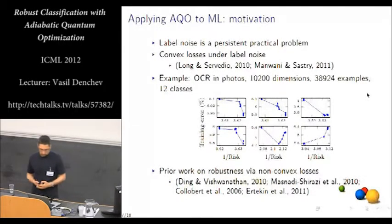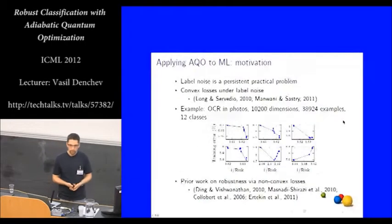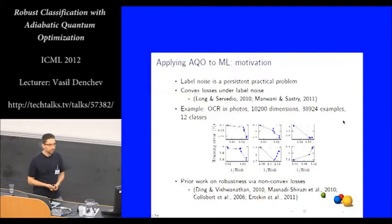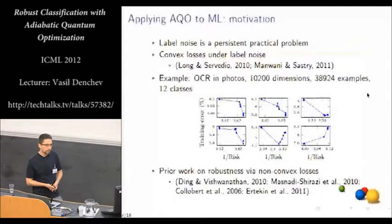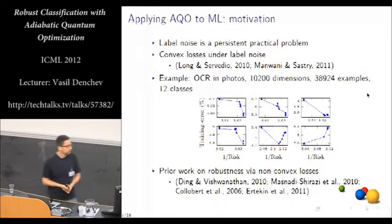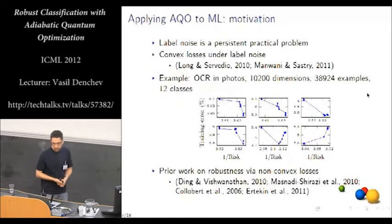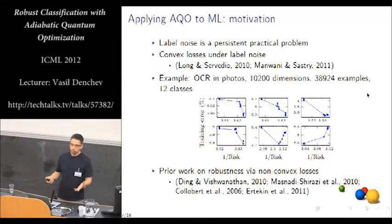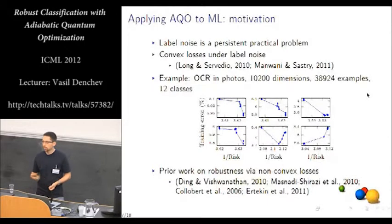Especially when convex losses are used to train classifiers. So there has been some work in the past couple of years that has studied convex losses under label noise. And they have shown that actually they cannot be made robust to the label noise that might be present in the data in practical situations. So that's why here we try to take advantage of the quantum hardware on a non-convex loss function, which would allow us to be robust to the label noise in practical data sets.